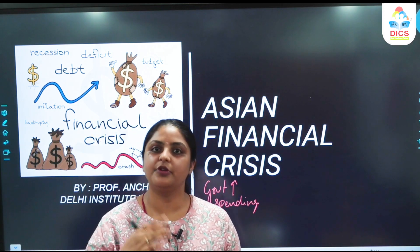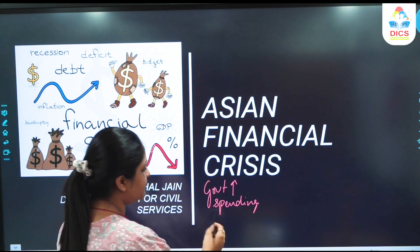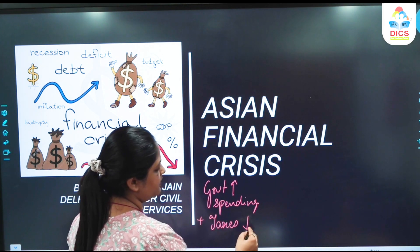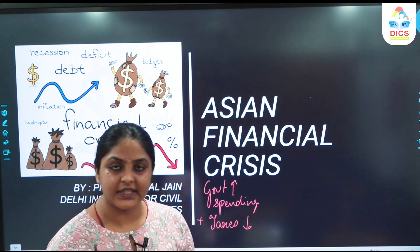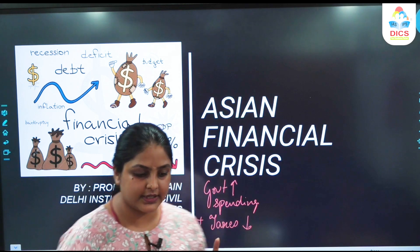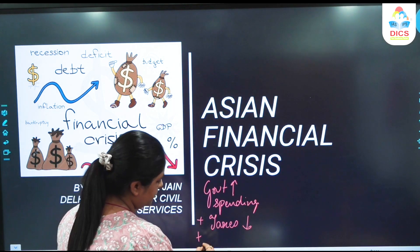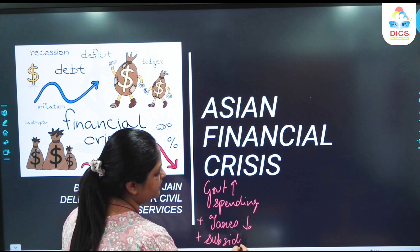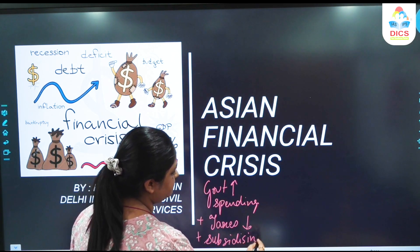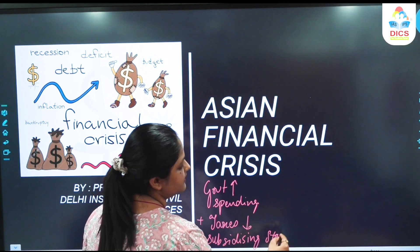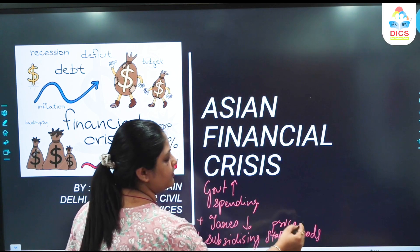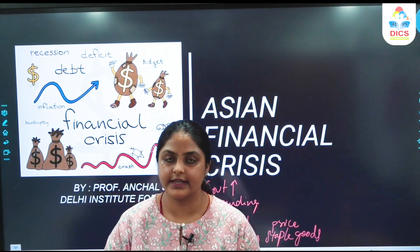Any country's government first increases spending. Second, it keeps taxes low. Third, staple goods prices are subsidized. So the government is increasing spending, keeping taxes low, and subsidizing staple goods prices.